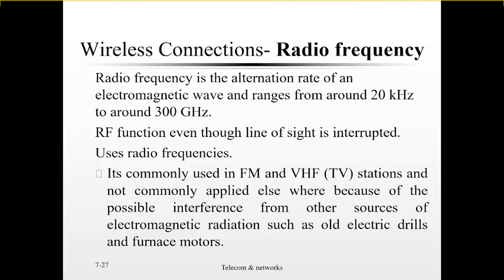Another wireless connection is radio frequency. Radio frequency operates at speeds from 20 kilohertz to around 300 gigahertz. Radio waves at a slow speed are the waves between 20 kilohertz and 300 gigahertz, and those waves have low energy. The lower the speed of a wave, the lower the amount of data it can carry. That is why in fiber optic, the waves are fast and can carry huge amounts of data, whereas in radio waves, the waves are slower and carry a lower amount of data.